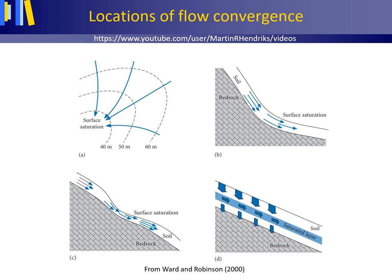The process of a rising water table reaching the land surface is a very important mechanism for the generation of depression storage and then saturation excess overland flow in humid climates. The saturated areas where quick flow is generated, with saturation often occurring from below, are called variable source areas.